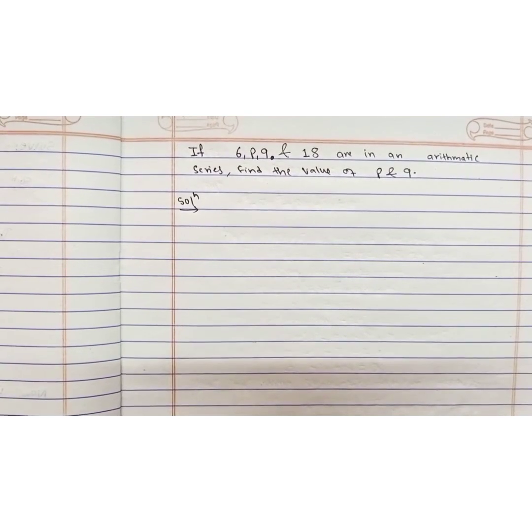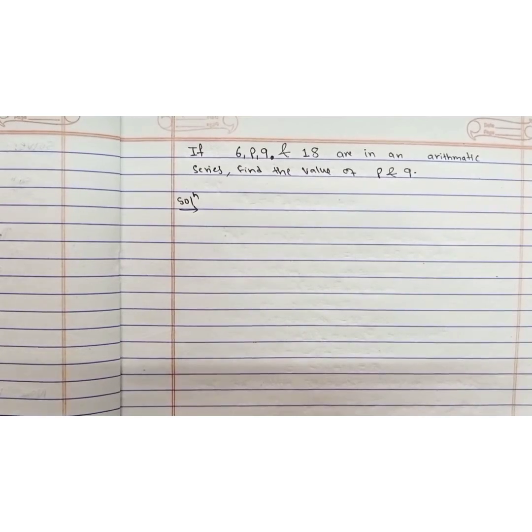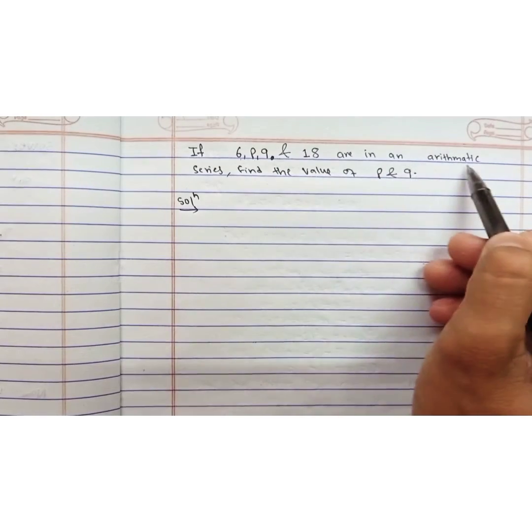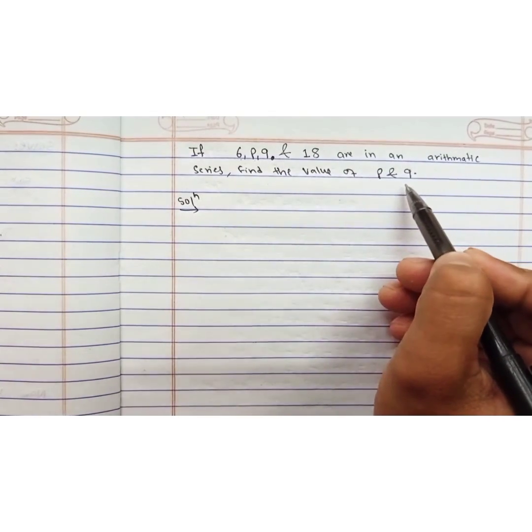This is one of the most important types of short questions from sequence and series. Let me show you the process. If 6, p, q, and 18 are in an arithmetic series, find the values of p and q.